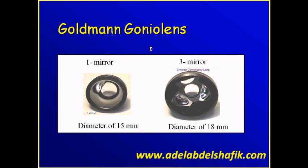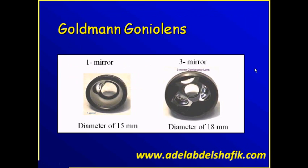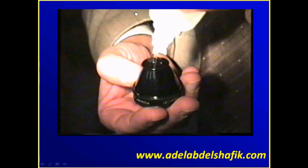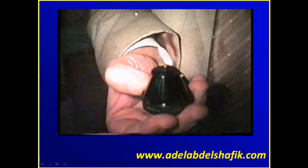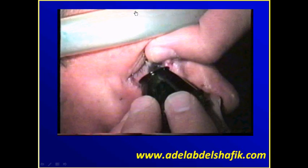We have different gonioscopes. We have the Goldman goniolens — the three-mirror, the one we are accustomed to use, with a diameter of 18 millimeters. There is another Goldman one-mirror with a diameter of 15 millimeters. The Goldman has a concave surface, so we need to fill it with visco material to avoid having air under the lens.